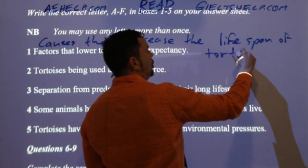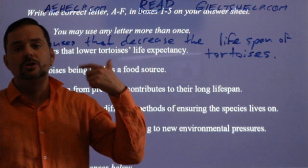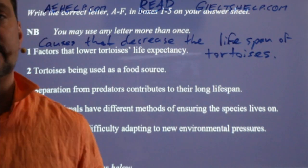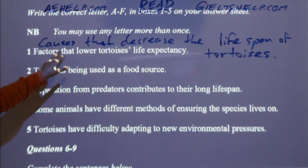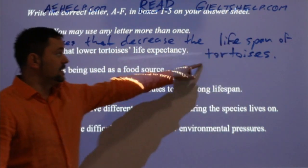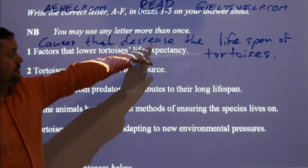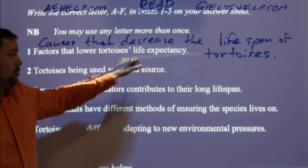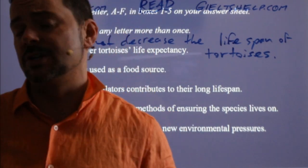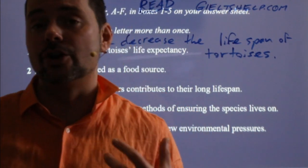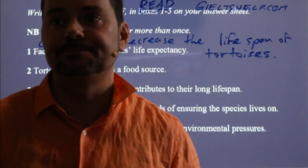At home you're doing this on paper; in the exam you're quickly doing this in your mind as best as you can. 'Factors that lower tortoise's life expectancy' equals 'causes that decrease the lifespan of tortoises.' This is the same idea in the passage — they're always paraphrasing in the IELTS, always using different words. This is another reason that skimming and scanning are not effective — you're not finding the same words.